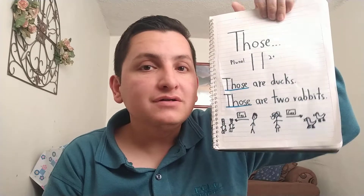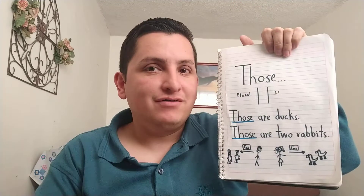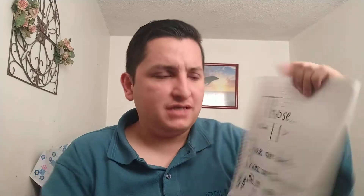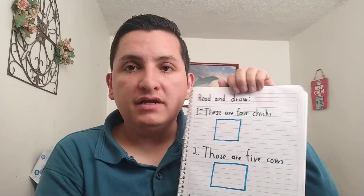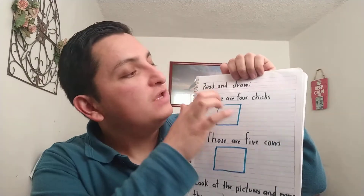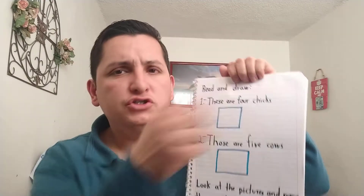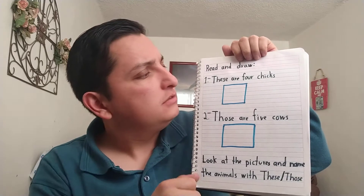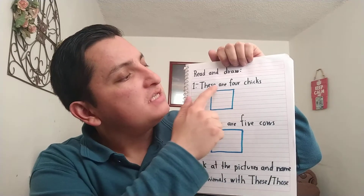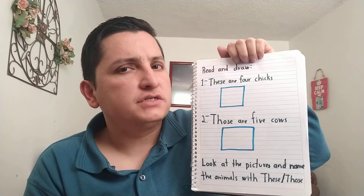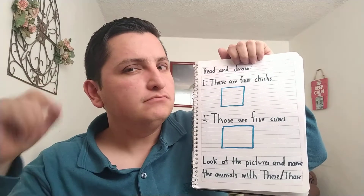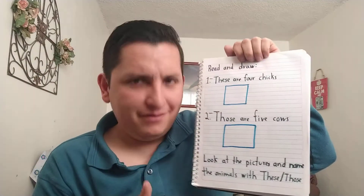Do you see? Now let's make a quick and simple exercise. On a piece of paper, you can read and draw — you can copy this if you want. Number one: these are four chicks. What are the chicks? Now draw them right here.